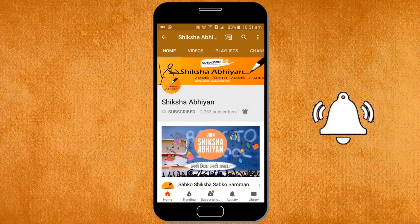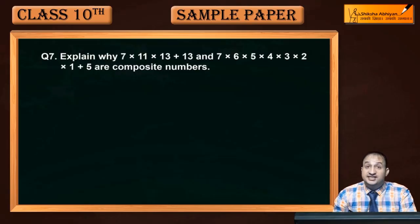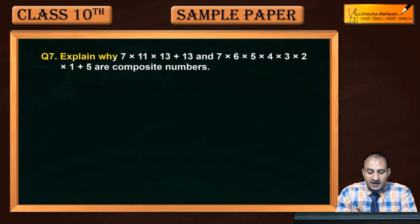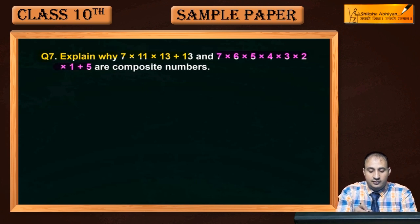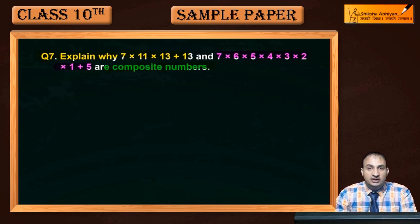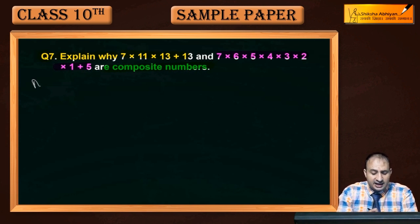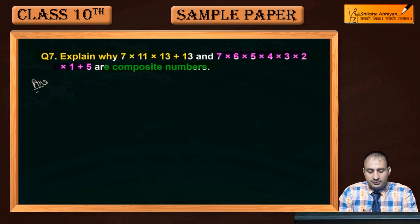Question 7: Explain why 7×11×13 + 13 and 7×6×5×4×3×2×1 + 5 are composite numbers. यानि ये दो given numbers composite क्यों हैं। यह question आप already NCERT exercise के अंदर कर चुके हैं। तो first number जो है हमारा 7×11×13 + 13।